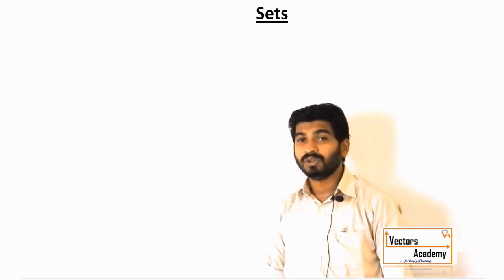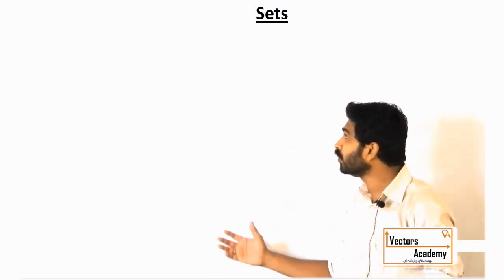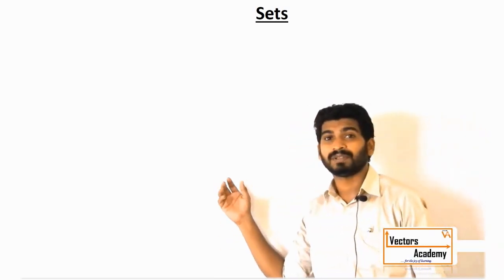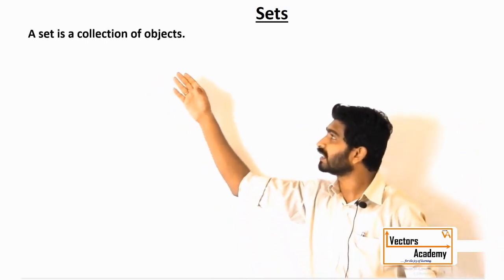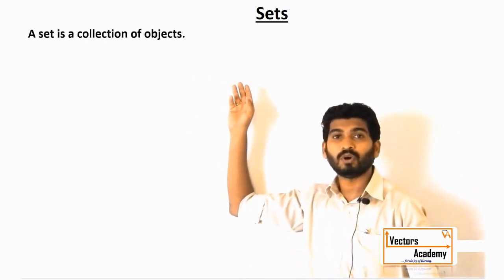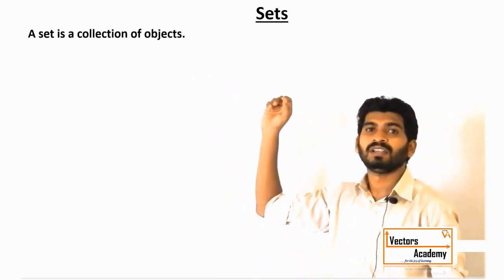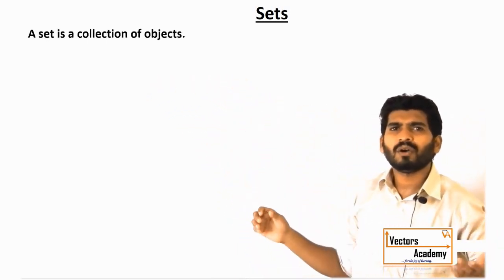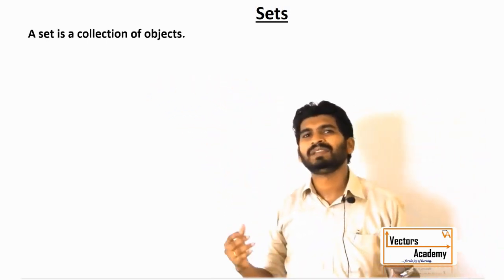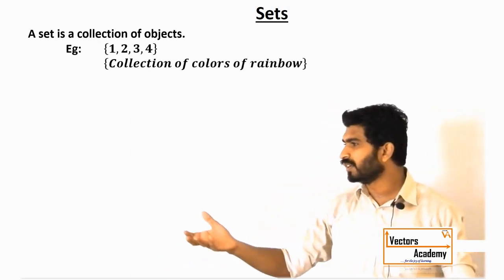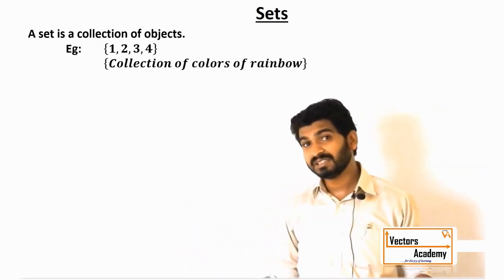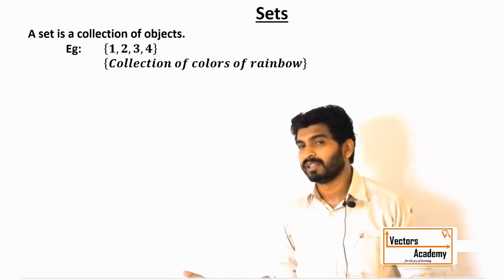Let us have a quick look at our first chapter: sets. Now what is a set? A set is a collection of objects. Objects can be numbers, alphabets, different colors, or different things which are there in the surrounding.